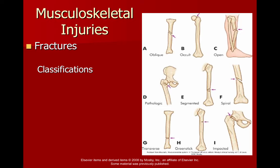The last thing I want to mention about children is something very different about children's fractures versus adult fractures that could greatly affect the child's growth and performance as they become adults. Hopefully you thought about the growth plate. If you don't know where the growth plate is, go back to your anatomy and find the epiphyseal plates — those are the growth plates — and figure them out on all the major bones.